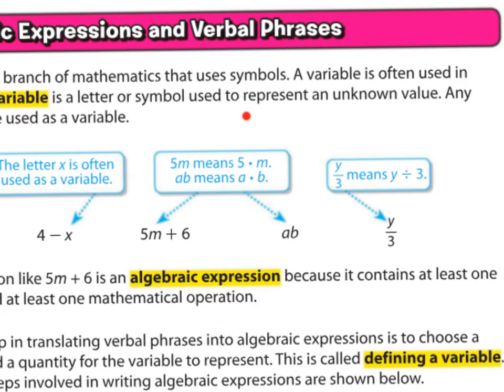Here we have 5M means 5 times M. So when you have a number and a letter next to it with no symbol in between, they multiply. So we have 5Ms. This is called the coefficient, while this is called the variable. The number is called the coefficient. And then look at AB means A times B.